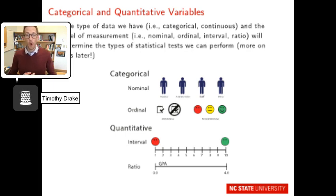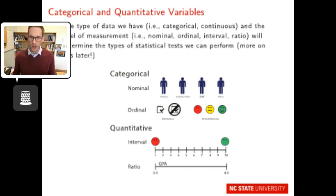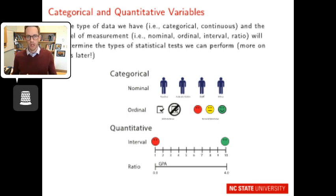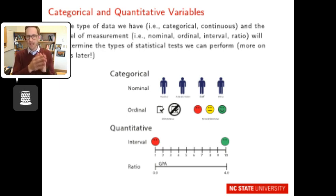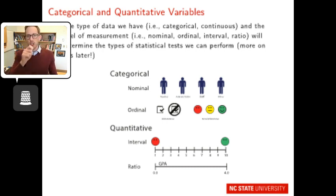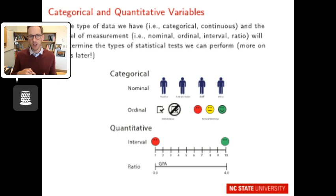When we think about quantitative information, we generally have two broad categories: categorical and continuous measures, which can be broken down into four levels of measurement: nominal, ordinal, interval, and ratio. At the beginning, when you first have your data set and you're understanding the unit of analysis and examining variables and their attributes, it's good to figure out the level of measurement within each variable because that will determine the type of statistical test you'll be able to perform.